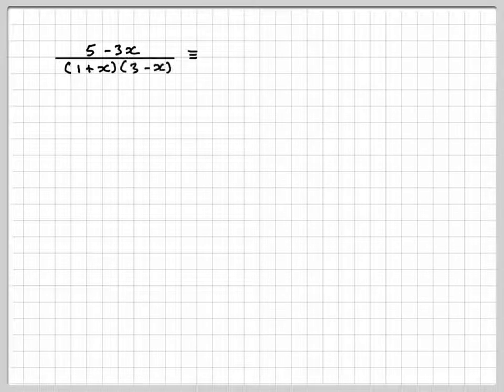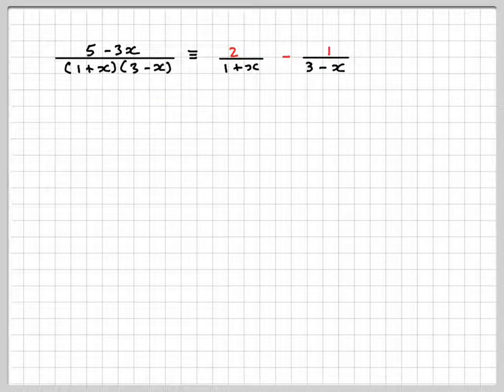Therefore, 5 minus 3x over 1 plus x, 3 minus x is equivalent to 2 over 1 plus x minus 1 over 3 minus x.